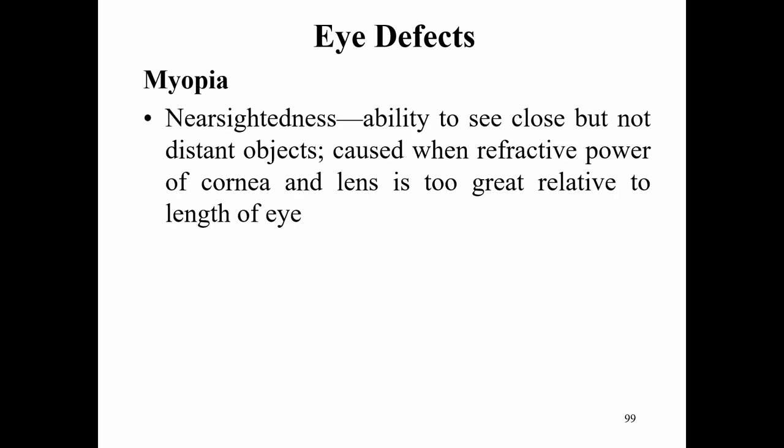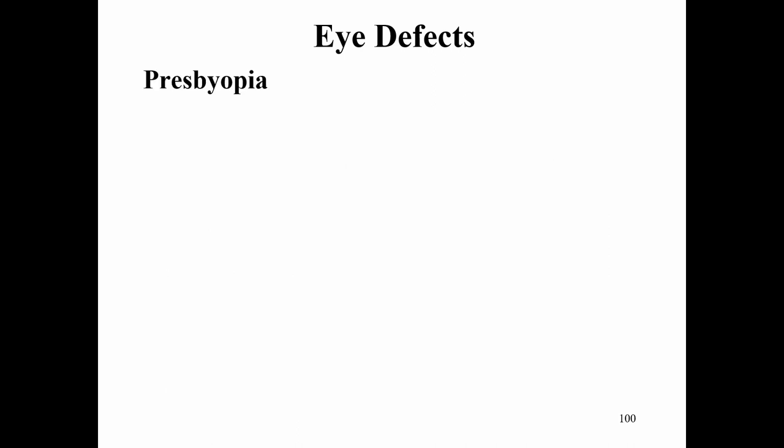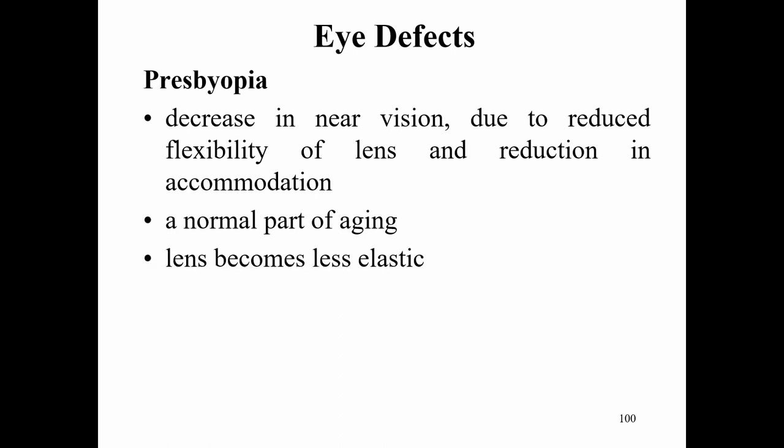Eye defects include: myopia (nearsightedness) — the ability to see close but not distant objects, caused when refractive power of the cornea and lens is too great. Hyperopia (farsightedness) — the ability to see distant objects but not close ones, caused when the cornea is too flat or the lens has too little refractive power. Presbyopia is the decrease in near vision due to reduced flexibility of the lens and reduction in accommodation — a normal part of aging.